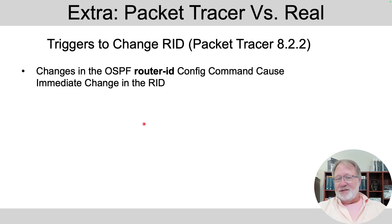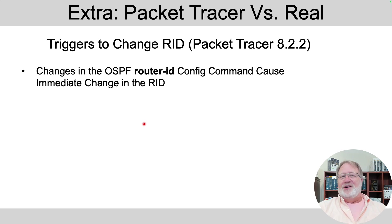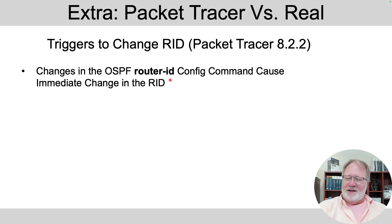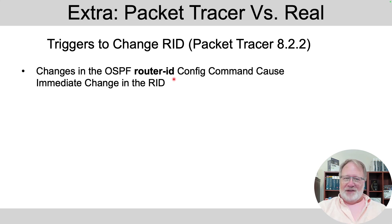One small extra — a difference with Packet Tracer so it doesn't drive you crazy when testing. On real routers, when you configure the router-id command, it requires a reload, power cycle, or 'clear ip ospf process' command to take effect. But in Packet Tracer, as soon as you configure the router-id command, it immediately changes the router ID. Just be warned: when you use this command in Packet Tracer, it's going to change the router ID immediately.